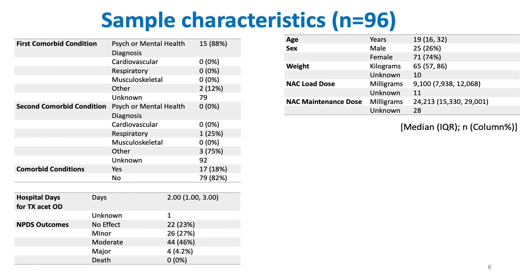Ninety-six cases met inclusion criteria. The mean age of patients was 19 years, ranging from 19 to 32 years, and 75% were female. NAC loading and maintenance dose are weight-based dosing. Average length of hospitalization for overdose was two days. 82% of our sample population had a comorbid condition, such as psychiatric and mental health.